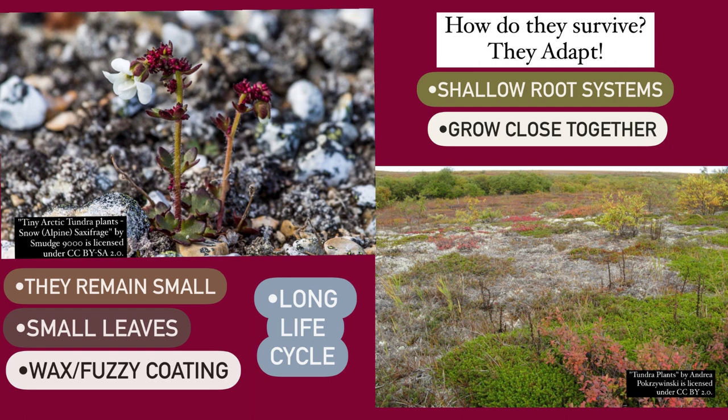You will find that some plants have a fuzzy wax coating, which is used to shield them from the cold and the wind, and also protects the plant to allow for reproduction. Most plants have small leaves, which help them to better retain moisture. Plants in the tundra have to have a shallow root system because only the surface of the tundra thaws out — any deeper than that is permafrost. These plants also have long life cycles to balance out the short period in which they can grow.